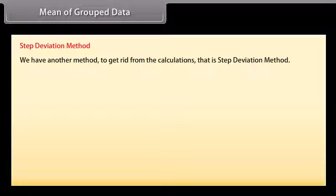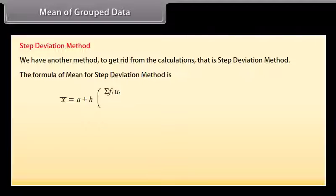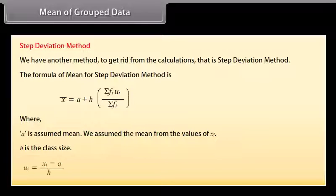Step deviation method. We have another method to get rid of lengthy calculations — that is the step deviation method. The formula of mean for step deviation method is: assumed mean plus H multiplied by summation of the product of Fi and Ui, divided by summation of Fi, where A is the assumed mean, H is the class size, and Ui equals Xi minus A divided by H.